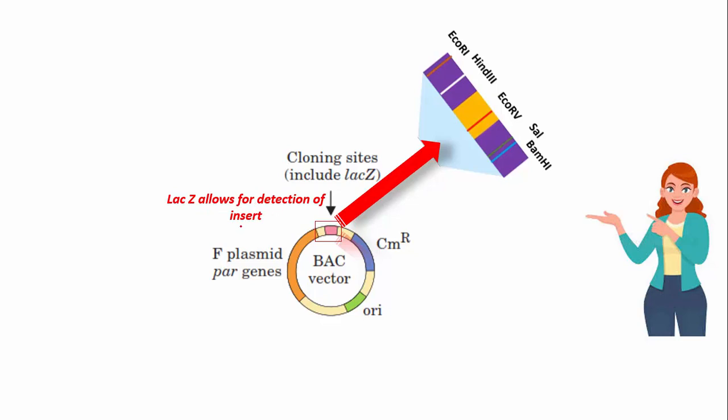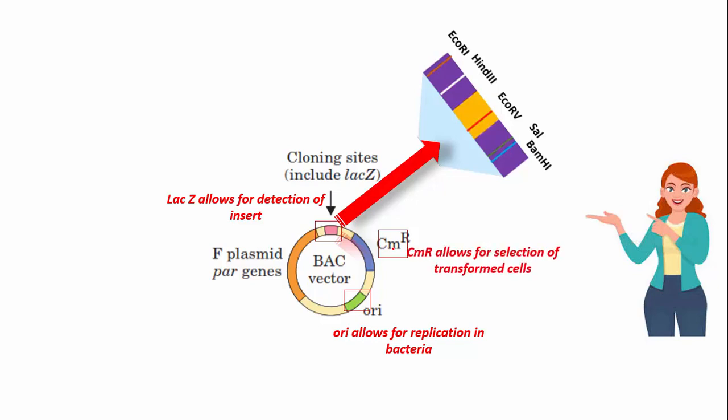The cloning site also contains the lacZ gene, which allows for the detection of our insert. The BAC vector also contains an origin of replication, which allows for replication in bacteria, as well as a chloramphenicol resistance gene that allows for selection of transformed cells.